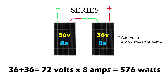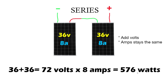In series, you take the negative from one solar panel and connect it to the positive of the other, and you're left with a negative and a positive. The big difference is instead of adding amps you add your volts, and the amps stay the same. So 36 volts plus 36 volts equals 72 volts, multiplied by 8 amps — that also gives us 576 watts.